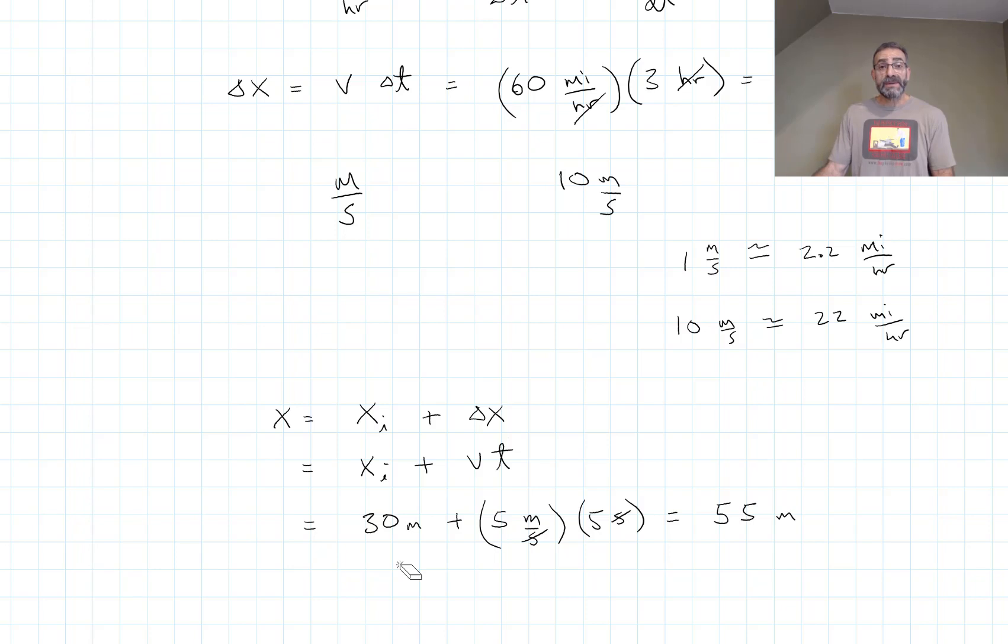Reason number two is sometimes you catch a mistake when you're including your units. You'll see that you've got the wrong formula - you forgot to square something, or you divided instead of multiplied. If you're carrying your units along, there's a possibility you could catch a careless mistake.